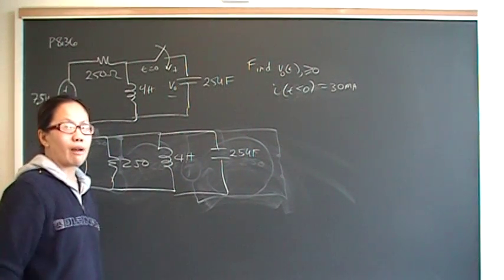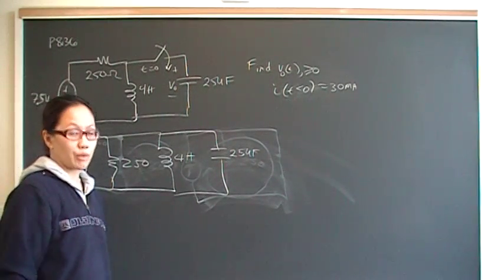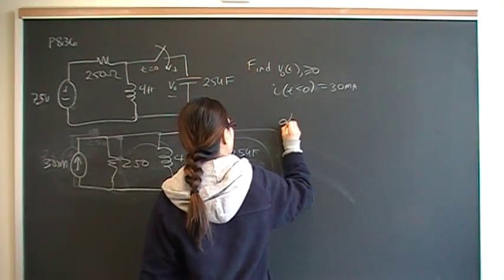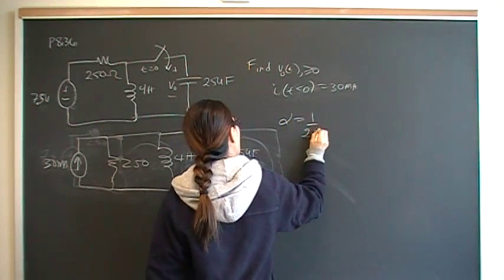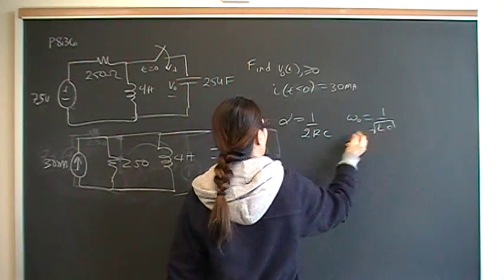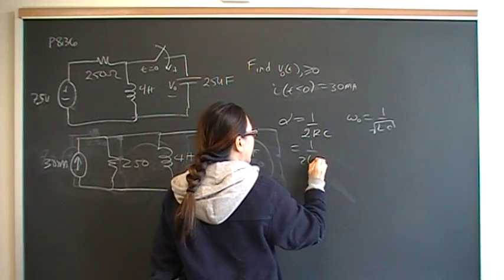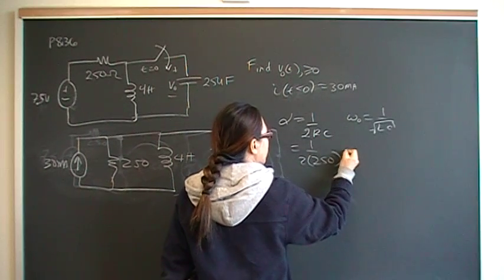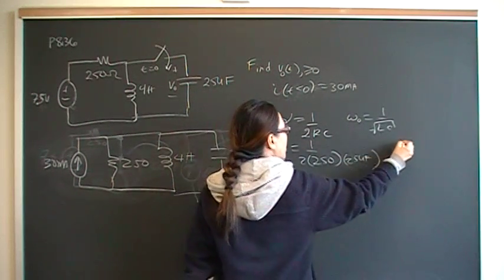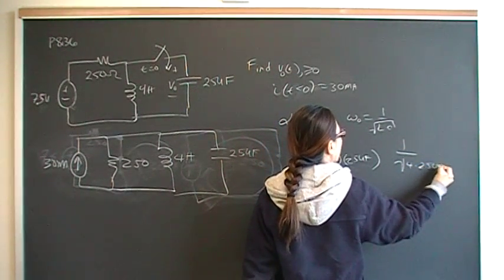The first thing we have to do is figure out alpha and omega. Before we can do anything else, we have to know what type of response we're looking at. For a parallel RLC circuit, alpha is 1 over 2RC, and omega naught is 1 over root LC. This gives me 1 over 2 times 250 times 25 microns. This one gives me 1 over root 4 times 25 microns.